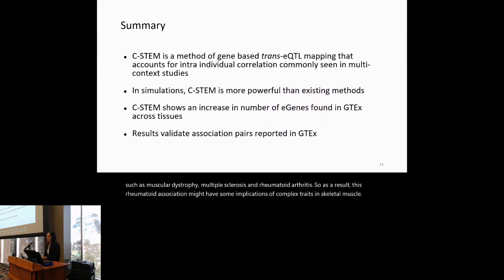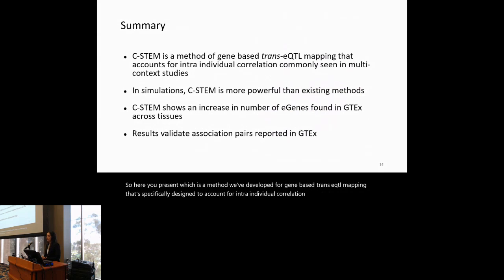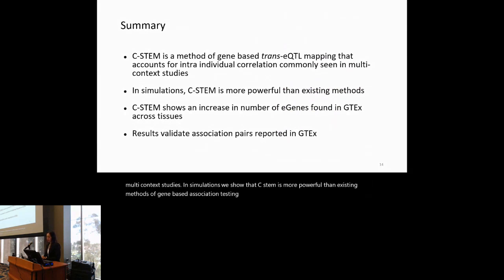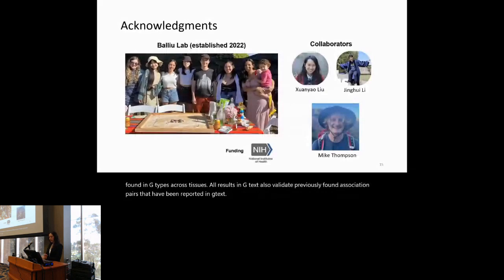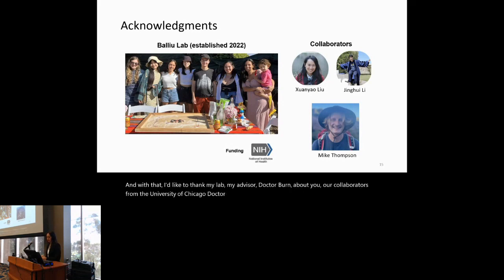In summary, CSTEM is a gene-based trans-EQTL mapping method specifically designed to account for intra-individual correlation in multi-context studies. Simulations show CSTEM is more powerful than existing gene-based methods, and application to GTEx shows a 65% increase in associations and validates previously reported pairs. I'd like to thank my lab, my advisor Dr. Bruna Ballyu, our collaborators from the University of Chicago Dr. Mike Thompson, and our funding sources. Thank you, and I'm happy to take questions.